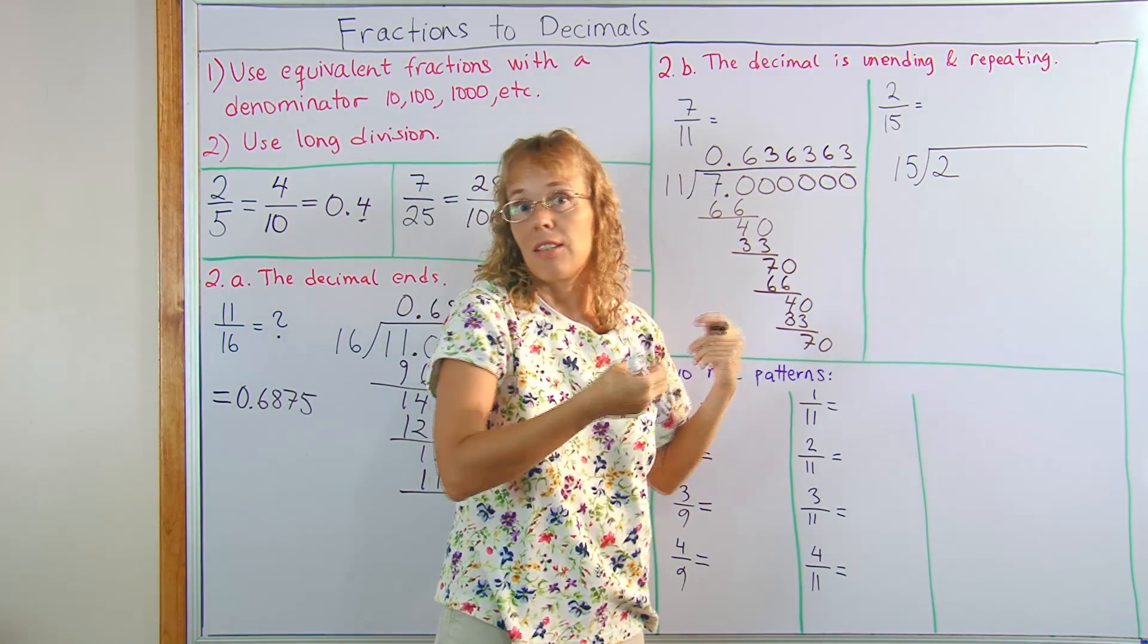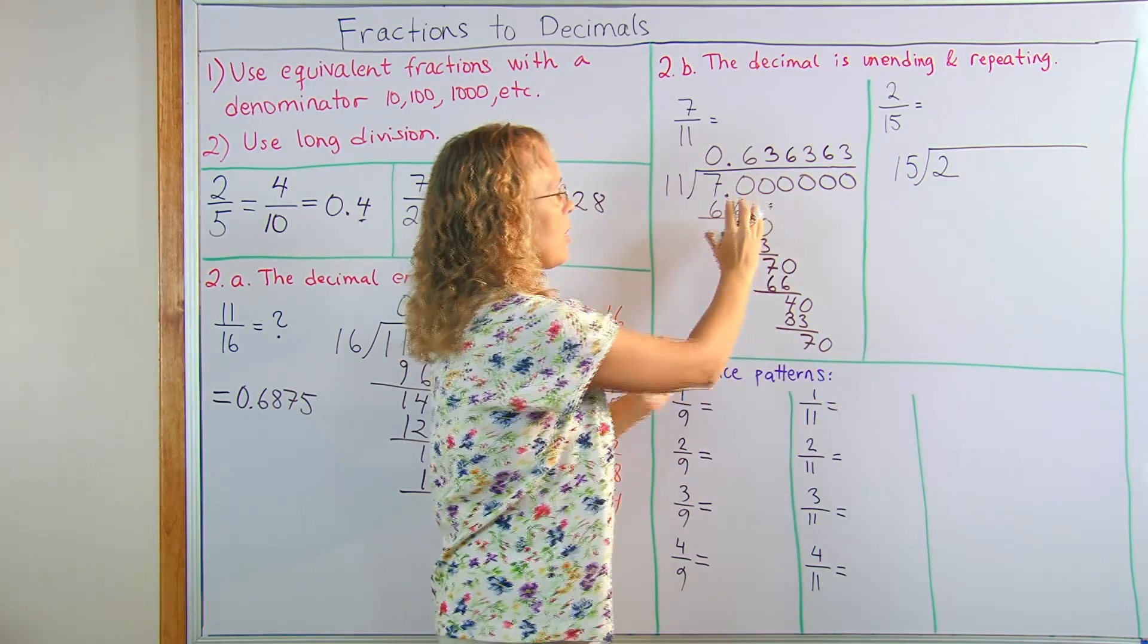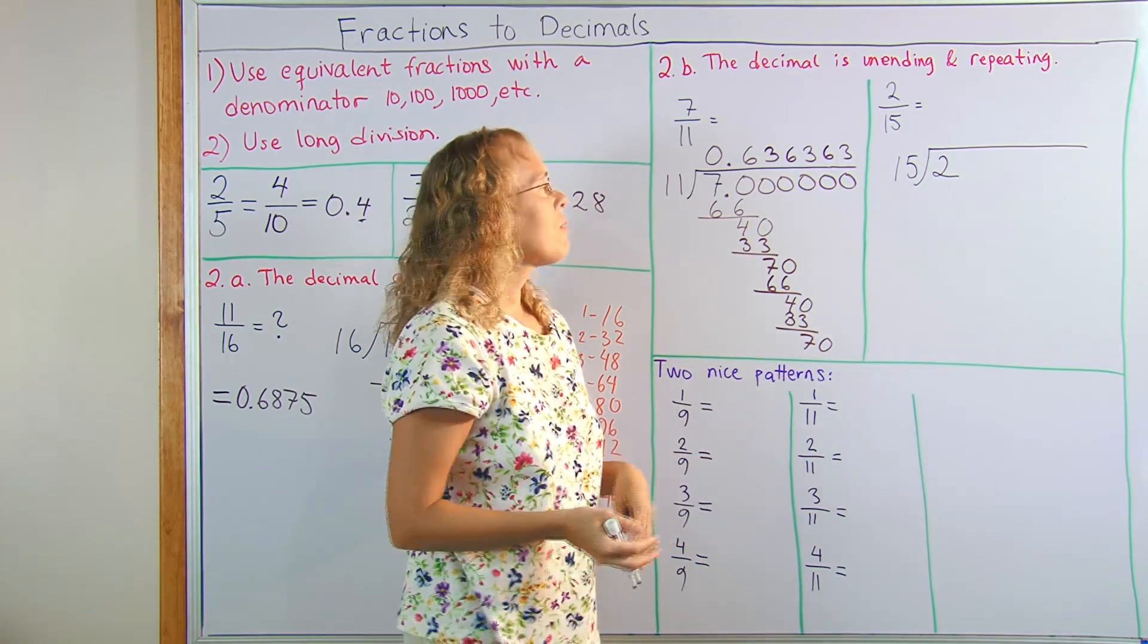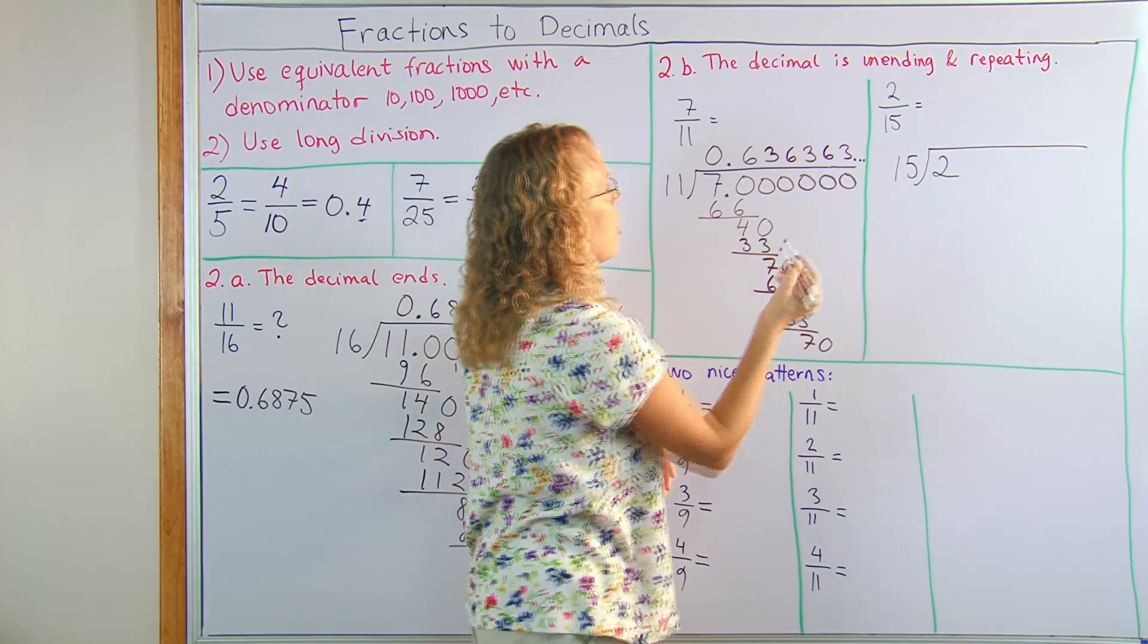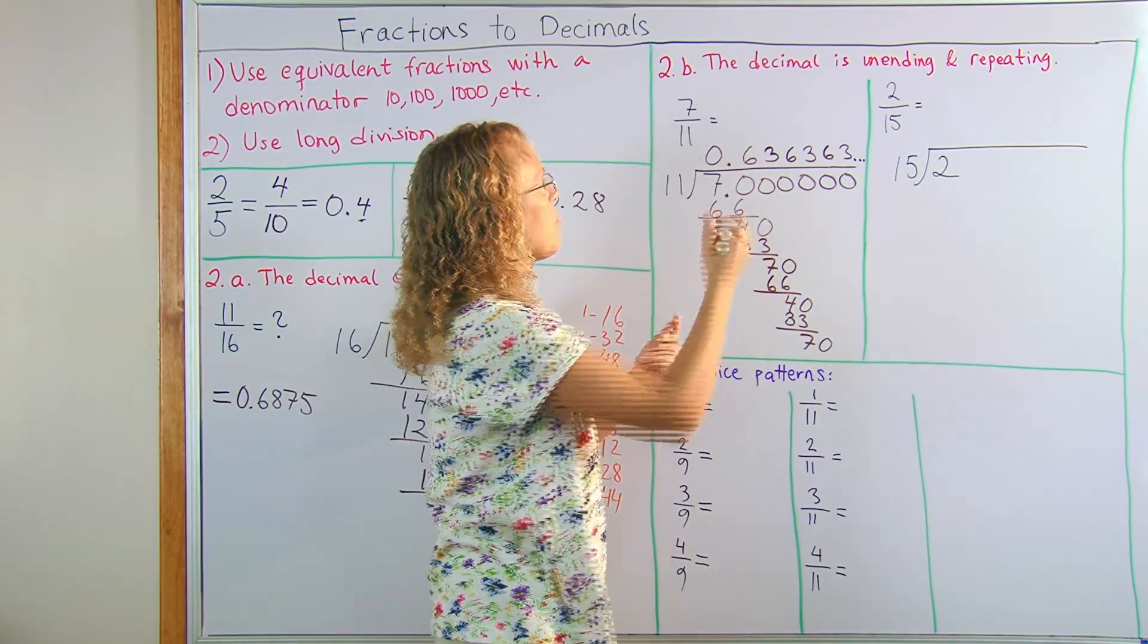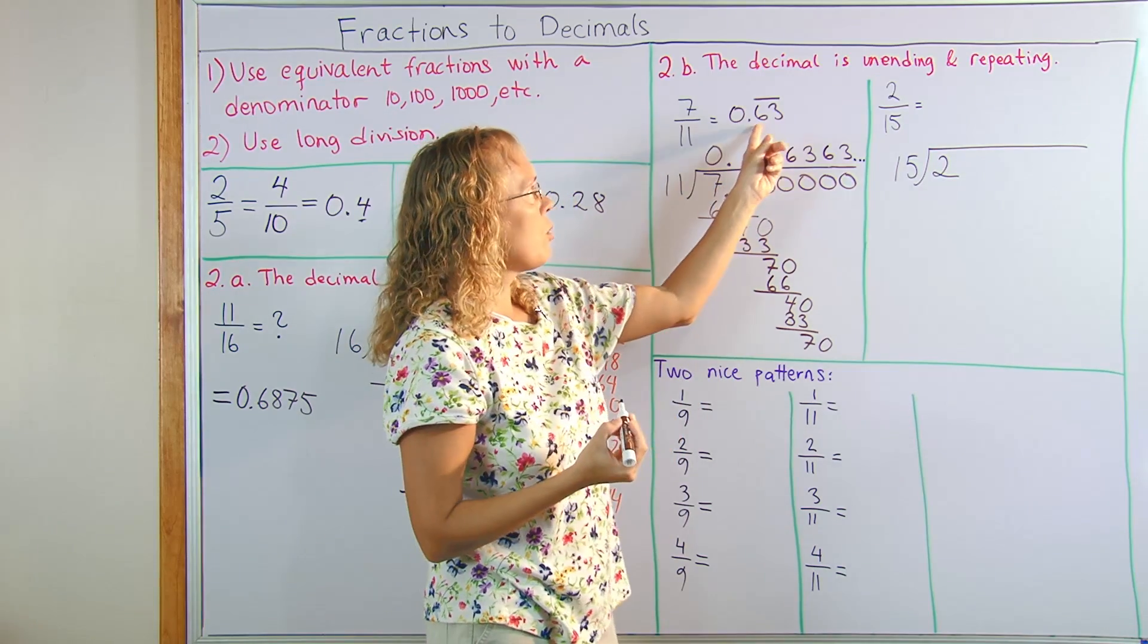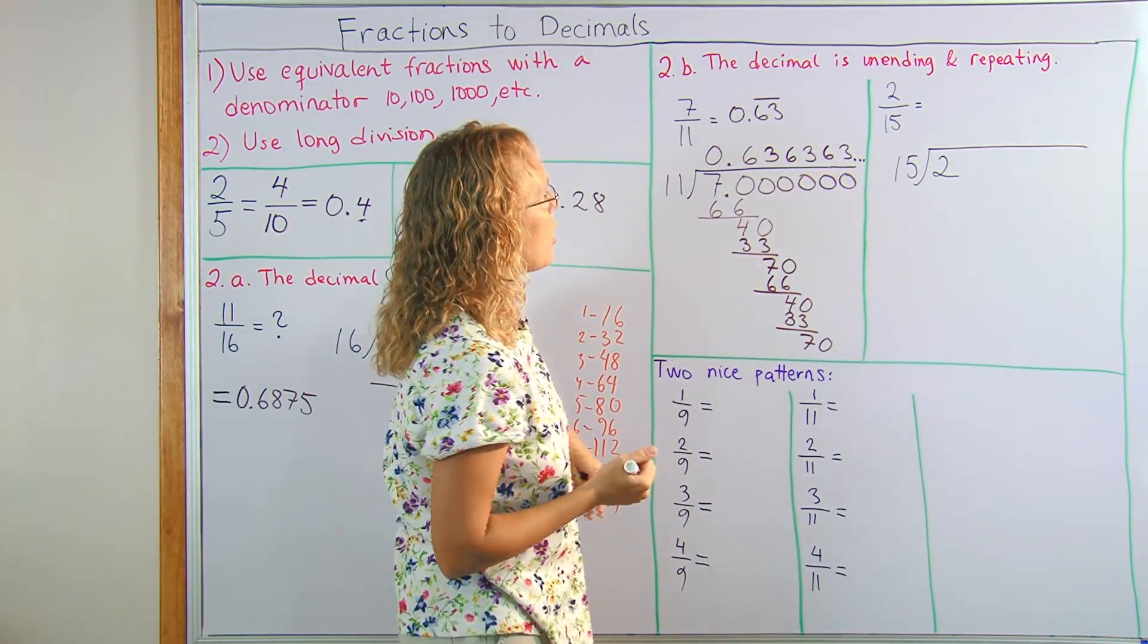So that's a repeating pattern here: 6, 3, 6, 3, 6, 3, and it never ends. It's very easy to see when you start dividing that this process will never end, but will keep repeating the same remainders over and over. So we can mark this as three dots like that to show that it does not end. Or there's another kind of notation. You take the part that actually repeats and put a line over it. So 6 and 3 will keep repeating over and over and over.